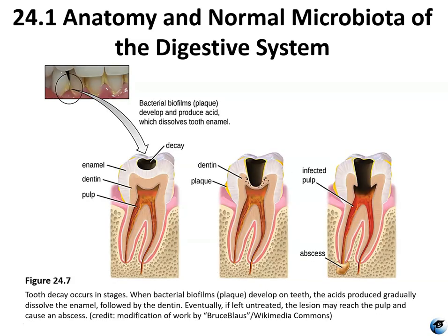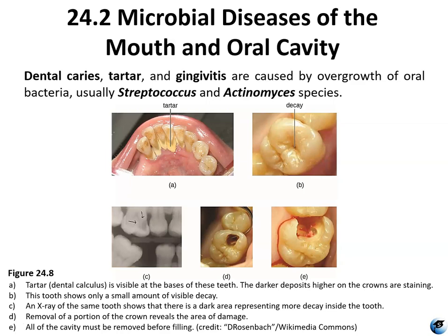Tooth decay, shown in figure 24.7, occurs in different stages. First, plaque forms on the teeth — plaque is a bacterial biofilm. The bacteria in the plaque produce acids that gradually dissolve the enamel on the surface of the tooth, and eventually start to degrade the dentin as well. If the bacterial infection is not treated, a lesion can reach all the way down into the pulp of the tooth, causing an abscess. Dental caries, tartar, and gingivitis are all generally caused by biofilms or overgrowths of Streptococcus and Actinomyces bacteria.